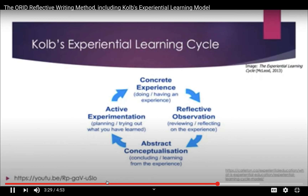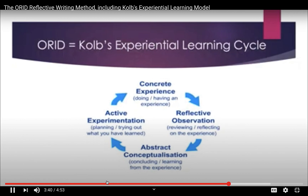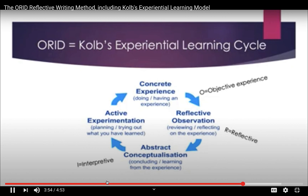Then Active Experimentation is when, after we learn from an experience, we might decide to do something different, change the way we behave, or try it out — and that leads to more experiences. You can see the similarities with ORID: the Objective experience is the Concrete Experience, the Reflective is that reflective piece, Abstract Conceptualization is the same as Interpretive — thinking about and naming your thoughts — and Decisional maps to Active Experimentation.